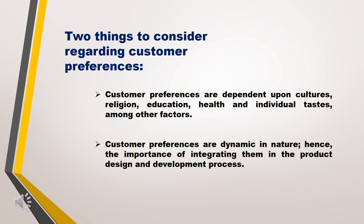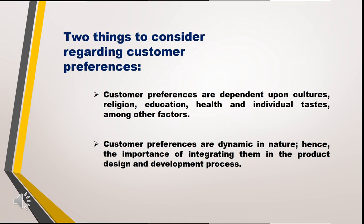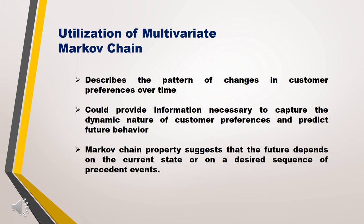Various scholars and business strategists are trying to formulate a model that would capture the dynamic nature of customer preferences and predict future behavior. This gives way to the utilization of the Multivariate Markov Chain (MMC), because this model suggests that the future depends on the current state or on a desired sequence of preceding events. This model was created to help marketing strategists capture the changing nature of customer preferences and at least predict future behaviors.